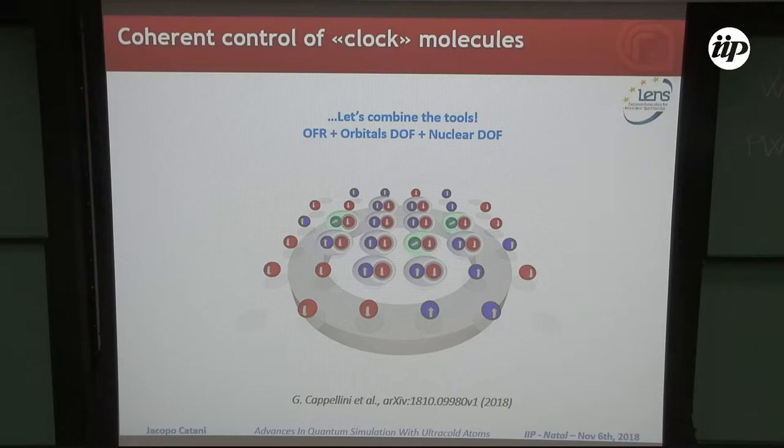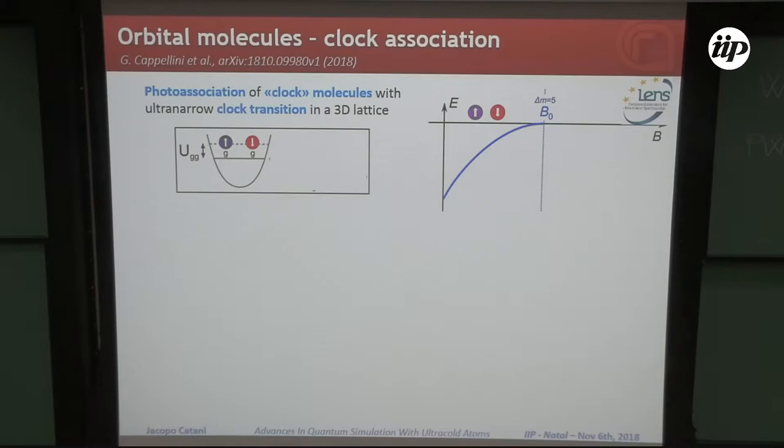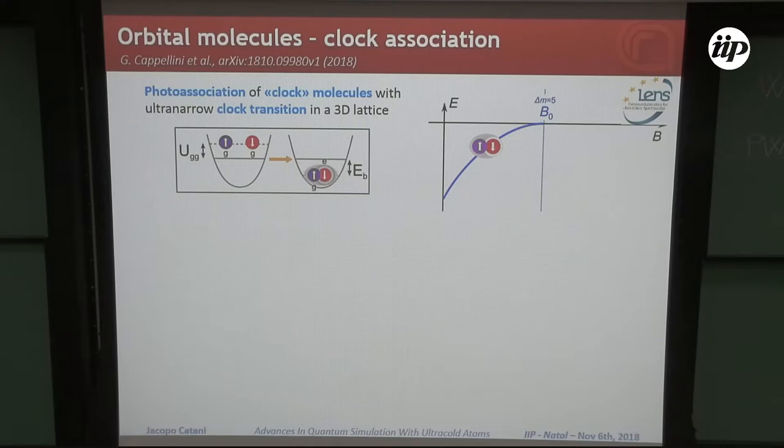Let's start with a three-dimensional lattice filled by atoms, two spins. Some of the sites will be filled by two atoms in spin up and spin down. The idea now is to shine a clock pulse and try to see if it's possible to drive this mechanism, driving two unbound atoms into a bound pair.